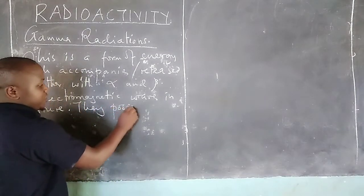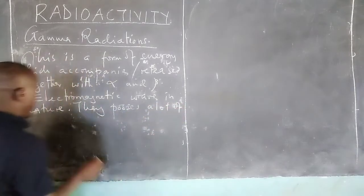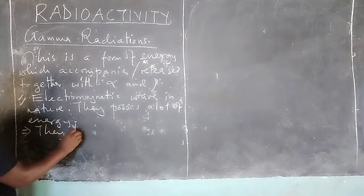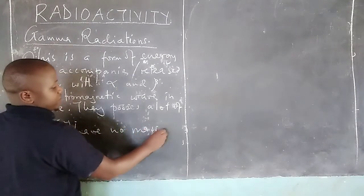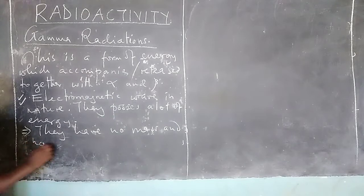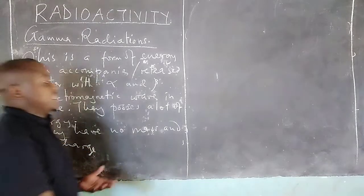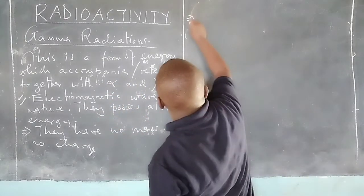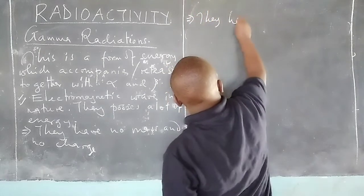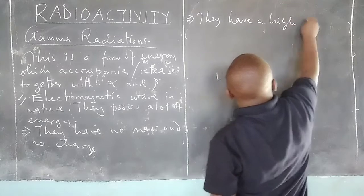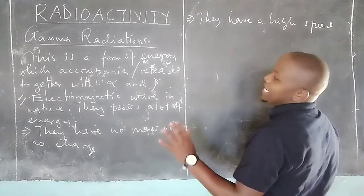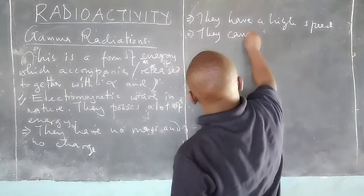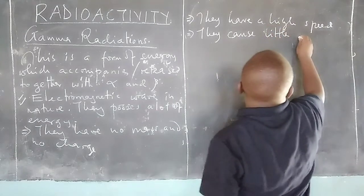They possess a lot of energy. They have no mass and also no charge. The fact that gamma radiations have no mass makes them move at a very high speed. And when they have a high speed, it means when they are passing through air, they cause little ionization.